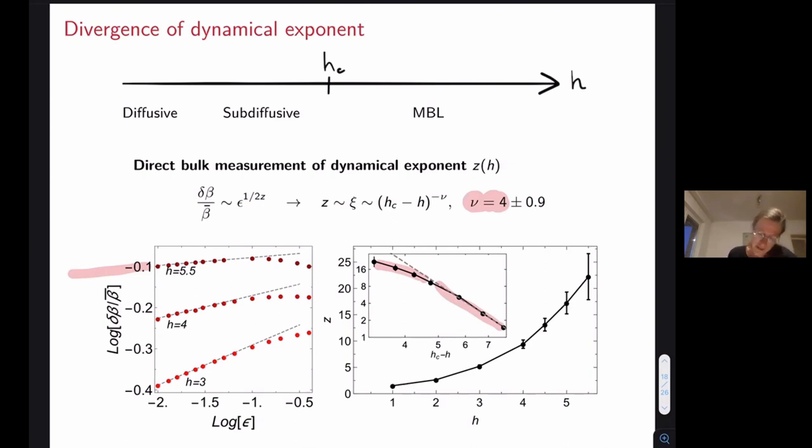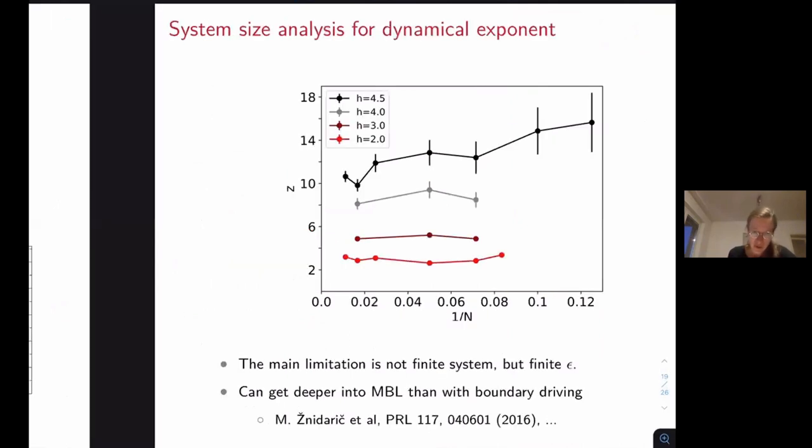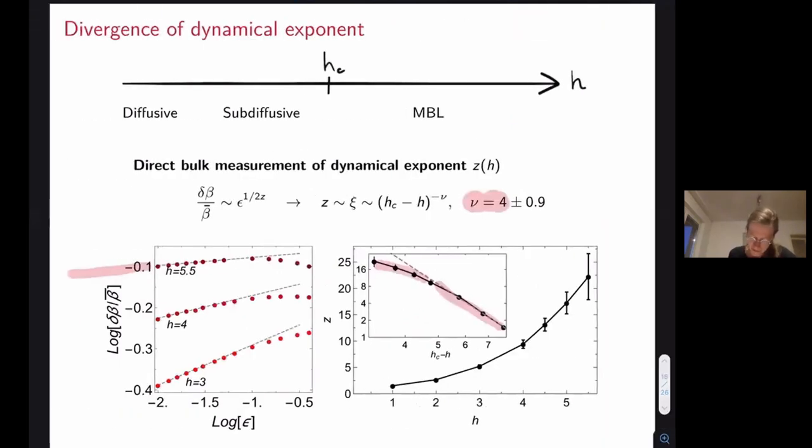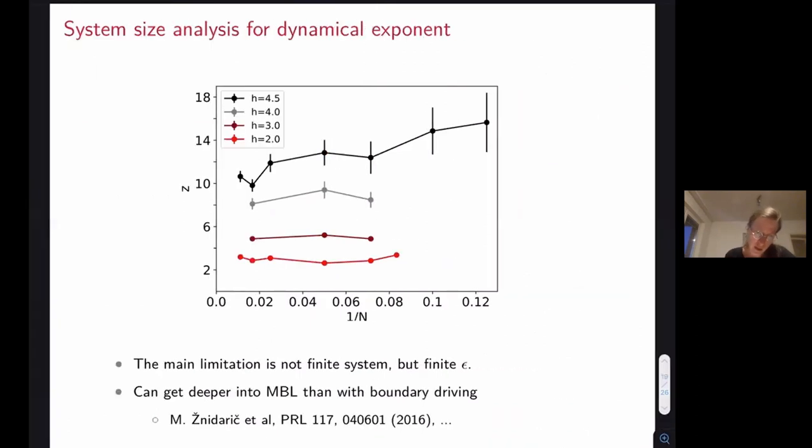We would again actually need much smaller, weaker coupling strength to the environment to somehow reliably determine dynamical exponent in these regimes. But still, our limitation is somehow that to go closer to the MBL transition and following the dynamical exponent we would need to somehow push the numerics to smaller couplings to the environment. But still where we can determine the dynamical exponent, we essentially do not see any finite size dependencies, so these are really kind of thermodynamic quantities.